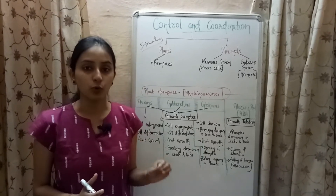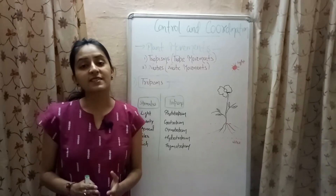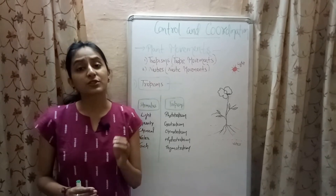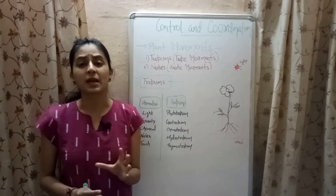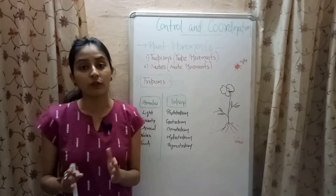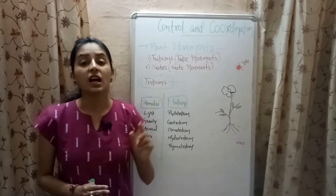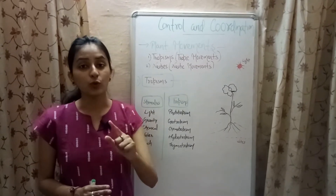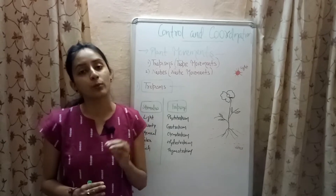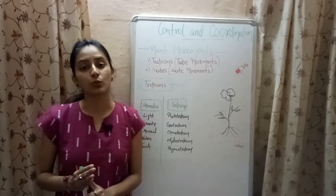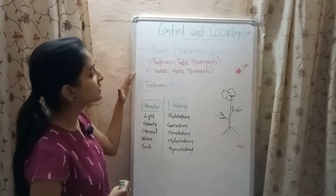Plants respond to stimuli by slowly growing, and this growth is sometimes so slow it cannot be observed immediately. Since plants are immobile and cannot move from one place to another, they show growth by movement of their body parts. These growth movements in plants are of two types: tropism and nasties.